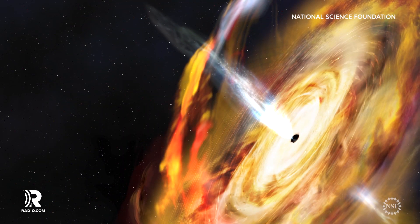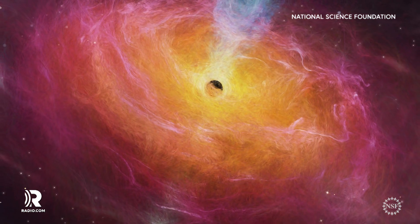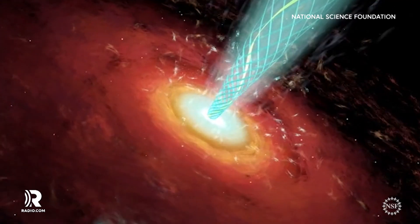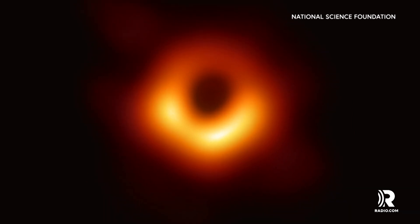Black holes are defined by their large amounts of matter stuffed into a very tiny space. The black color comes from the strength of their gravitational field that doesn't allow anything, including light, to escape.